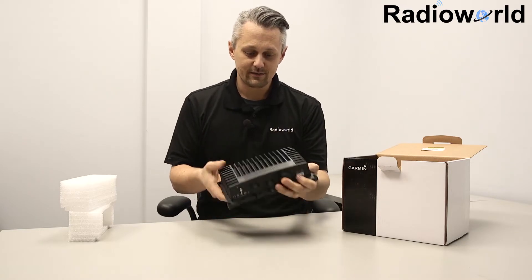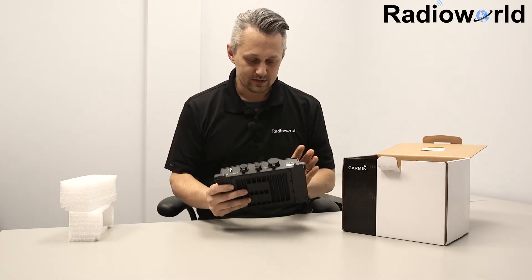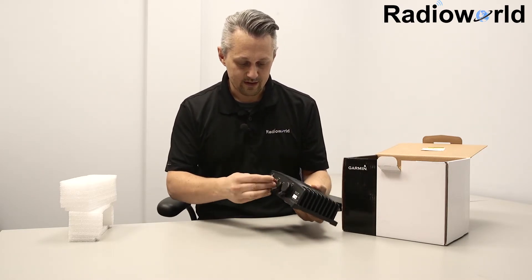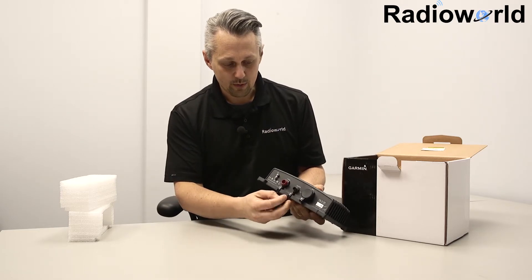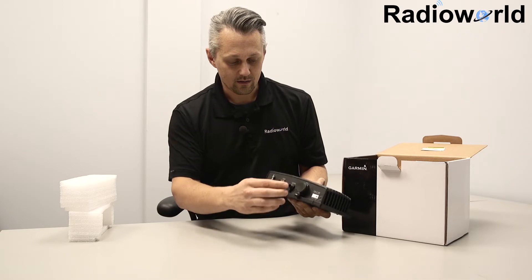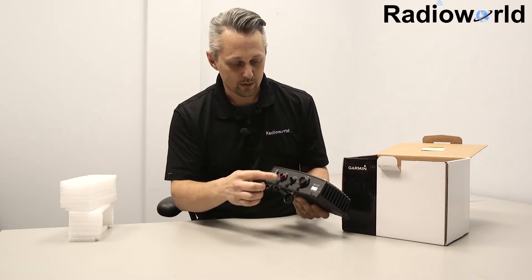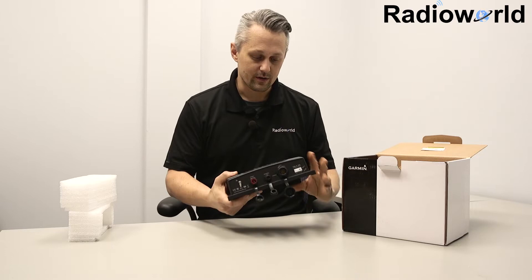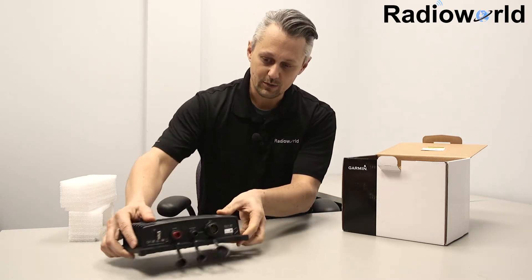So this is the brains of the LiveScope, it's a sonar module. It's metal construction, fairly heavy, with a power port, a network port, and one thing you'll notice is that's not an RJ45 connector any longer, it's a different Garmin Marine network port, and then your Panoptix LiveScope transducer port.